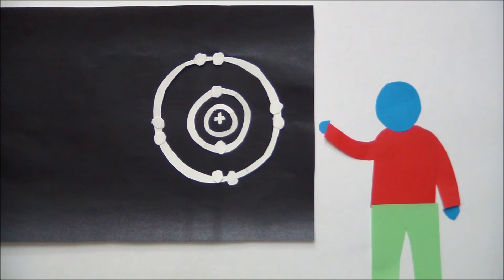In school, everyone learns that an atom is made up of a positively charged nucleus surrounded by negatively charged electrons orbiting it.